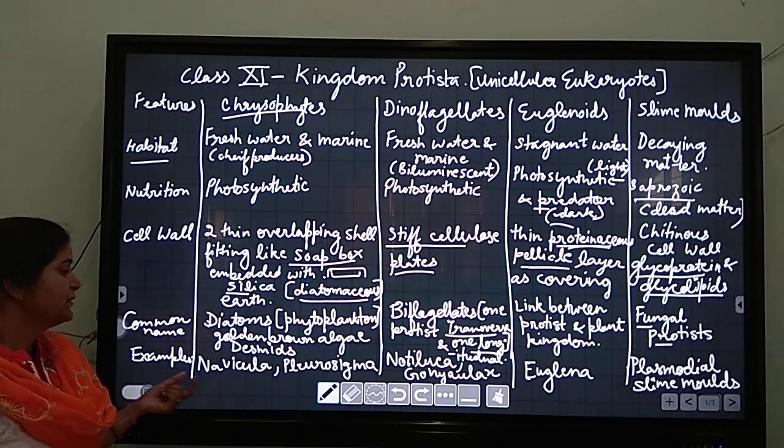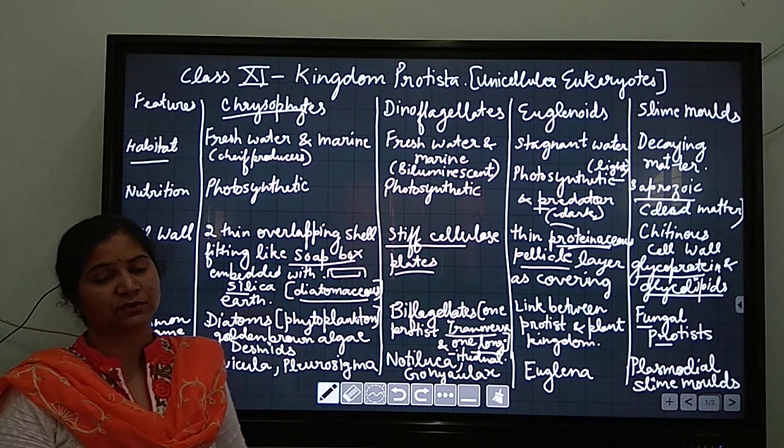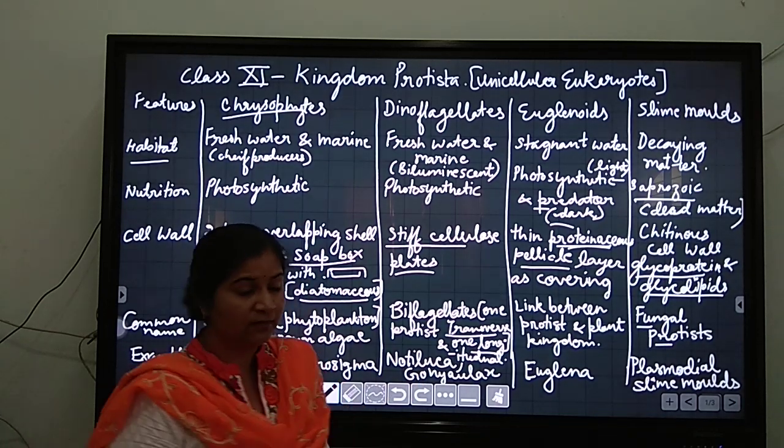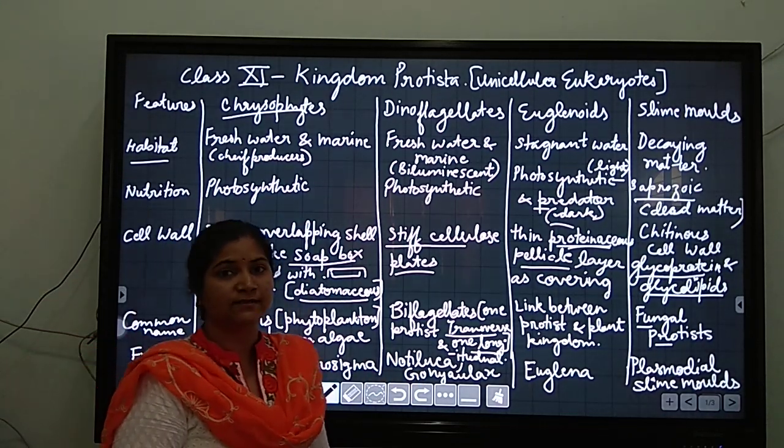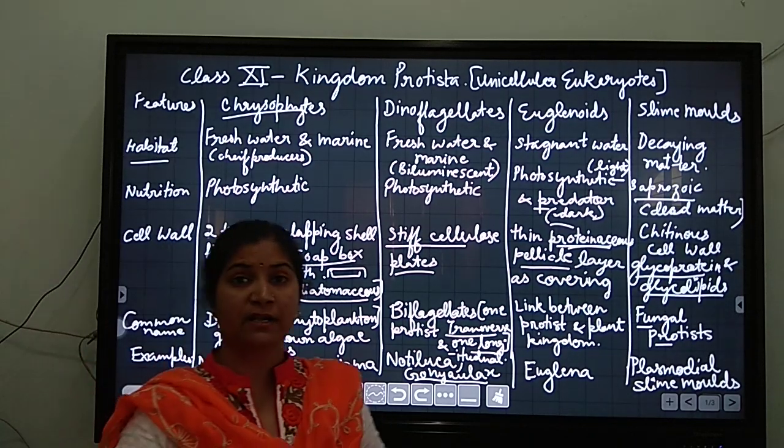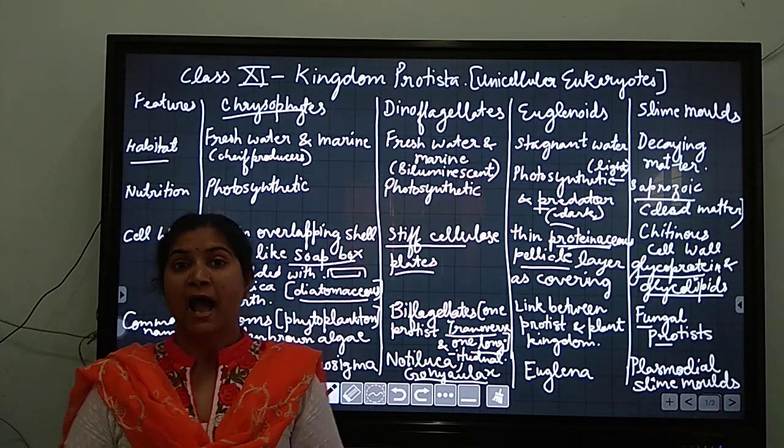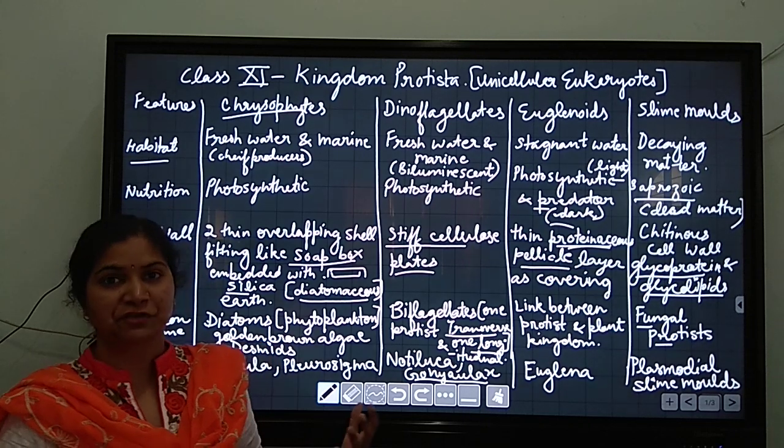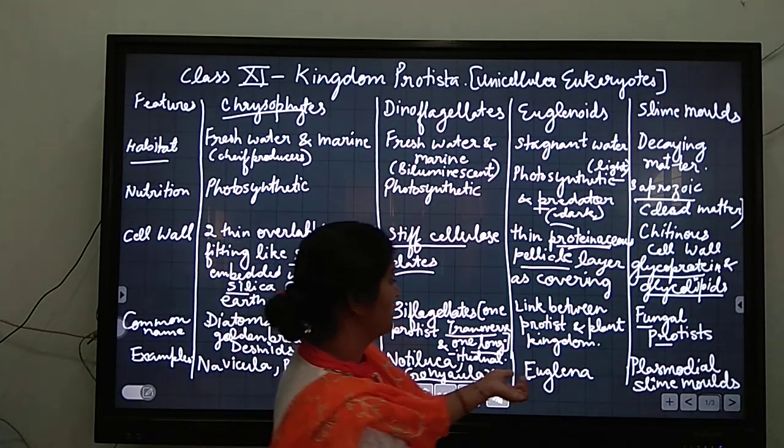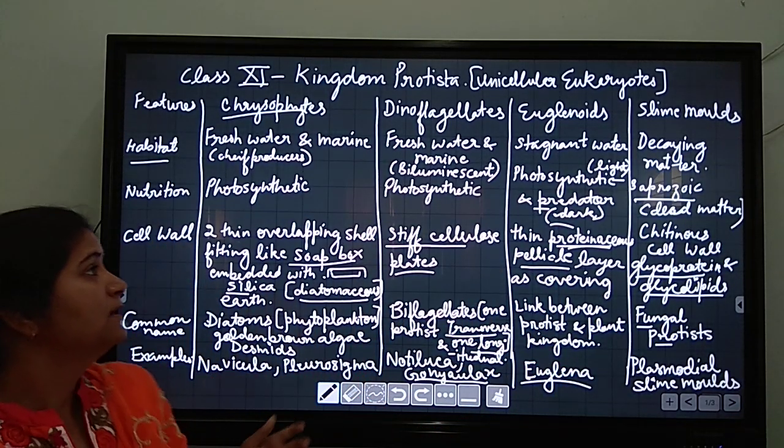Now coming to the examples. Navicula and Neurospora are examples of chrysophytes. Dinoflagellates include Noctiluca and Gonyaulax. Gonyaulax is causing red tides. In the ocean, when it rapidly multiplies, the sea appears red in color because of its presence. It can also cause poisoning of fishes because of releasing certain poison, and if this fish is eaten by human, we can also get poisoned. Euglena is the example of euglenoid, and Physarum and slime mold are examples of slime molds.